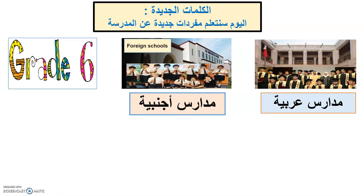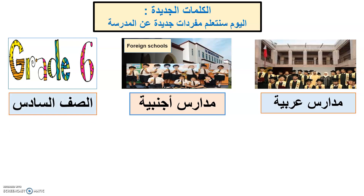And which grade are you in — year six? In Arabic I say 'as-saff as-sadis.' So every time I say 'saff as-sadis,' it means grade 6. So to repeat: مدارس عربية — Arabic school. مدارس أجنبية — foreign school. الصف السادس — grade 6.